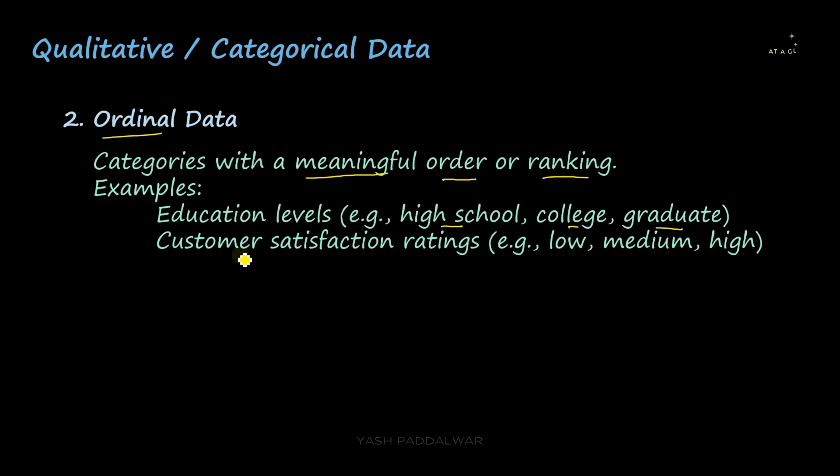Similarly, you can have another example: customer satisfaction ratings. The ratings can be low, medium, or high. Here you can clearly see that high ratings account for more satisfaction given by the customer, while low ratings will be inferior to high ratings. Some sort of ranking is followed. Up till now, you might have observed in both types of categorical data you have not encountered any numbers. This categorical data is also called non-numerical data. There are no numerical values present inside these types of data classes.